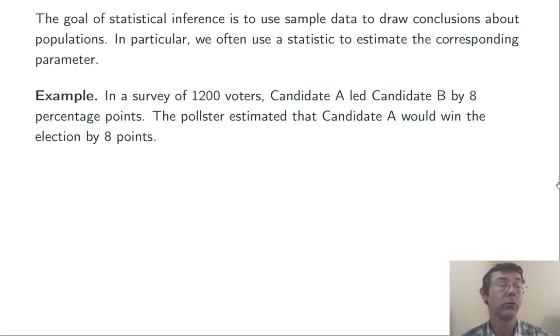The first 8, from the 1,200 voters, is a statistic, and the second 8, the actual outcome of the election, is going to be a parameter.